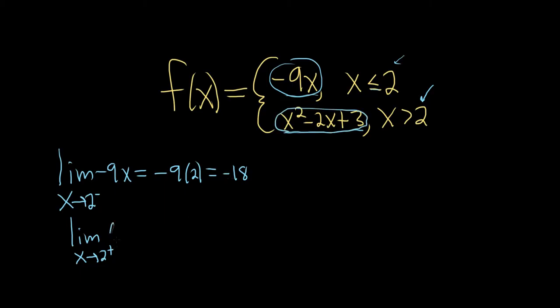This is x squared minus 2x plus 3. We can evaluate this limit by plugging the number in. So we get 2 squared, which is 4, minus 2 times 2, which is 4, plus 3. So we just get 3.